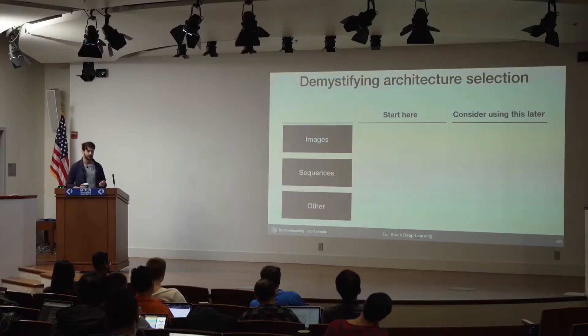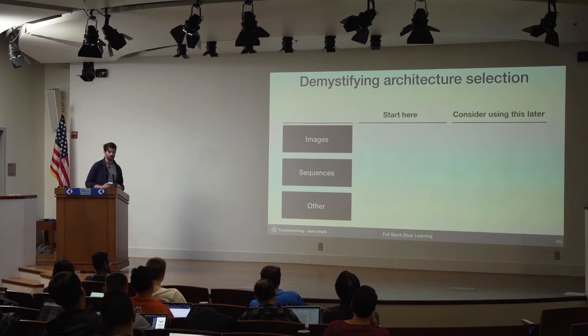In the limit, if you're trying to get to maximal performance, then architecture selection is challenging. But the good news is that when you're starting on a new problem, you can actually just follow a very simple set of rules that will allow you to pick an architecture that should do a decent job on the problem that you're working on.